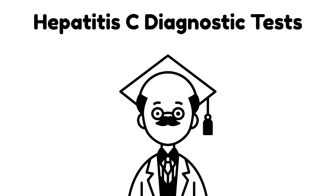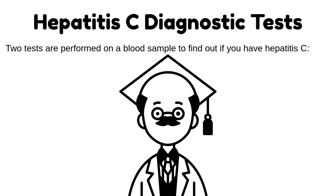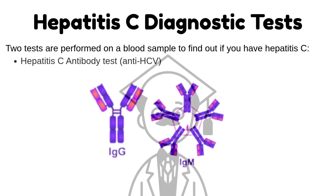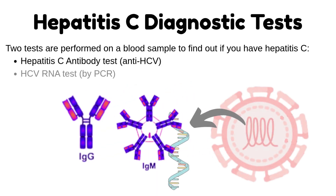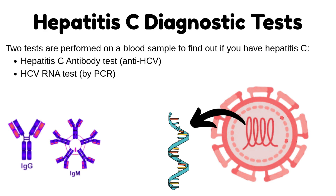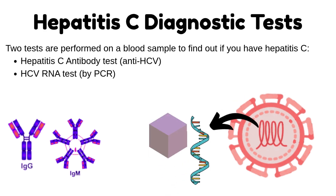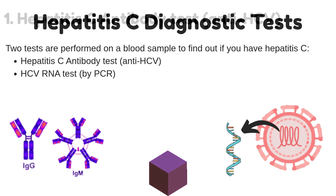Two tests are performed on a blood sample to find out if you have Hepatitis C: the Hepatitis C Antibody Test (Anti-HCV) and the HCV RNA Test by PCR. We will discuss them in detail.